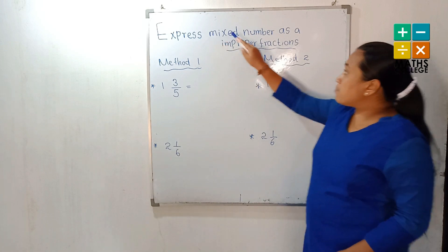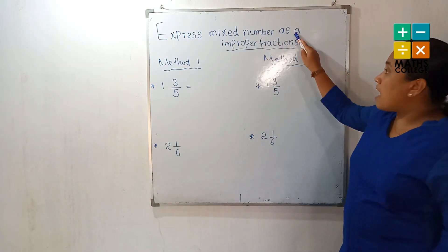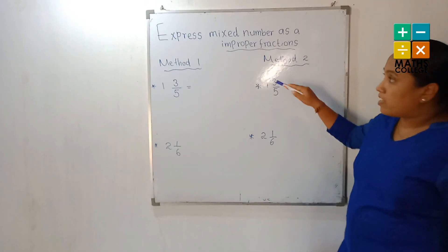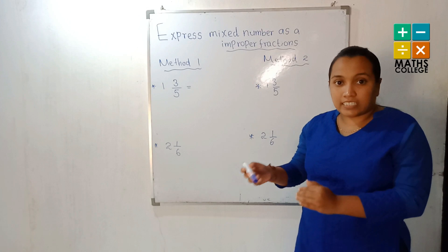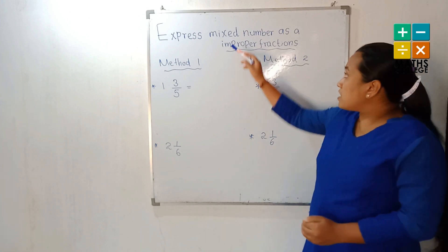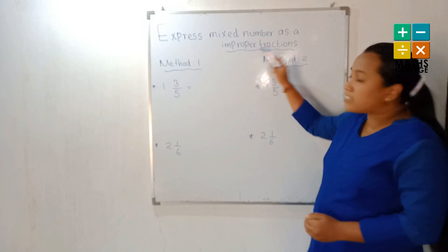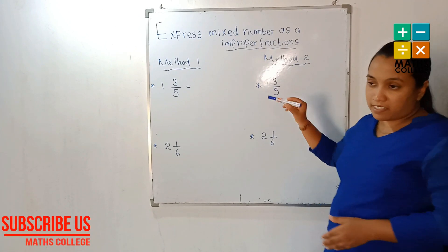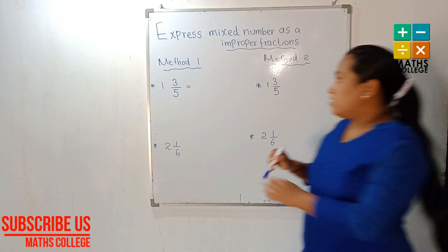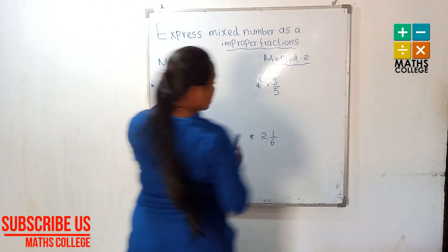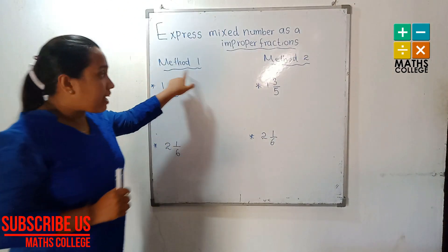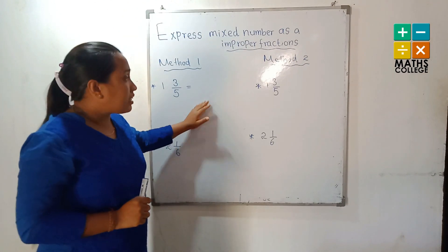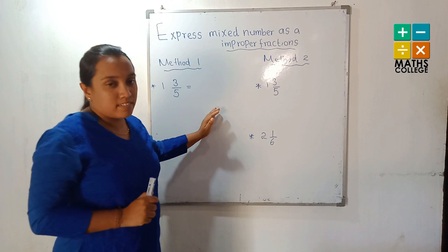Express a mixed number as an improper fraction — convert the mixed number as the improper fraction. There are two methods. We will learn about both methods.